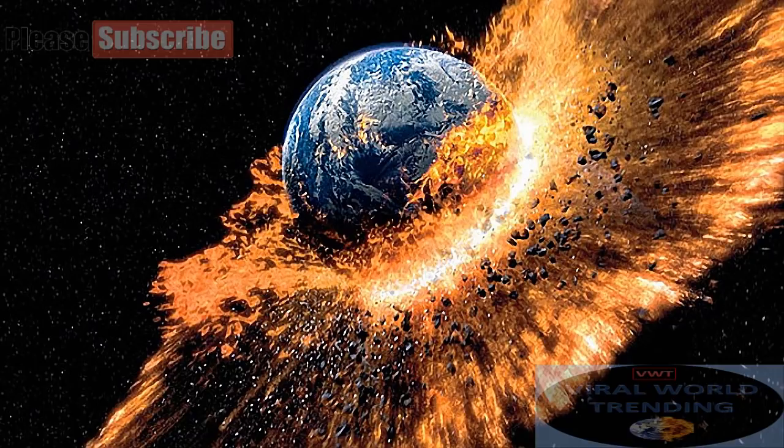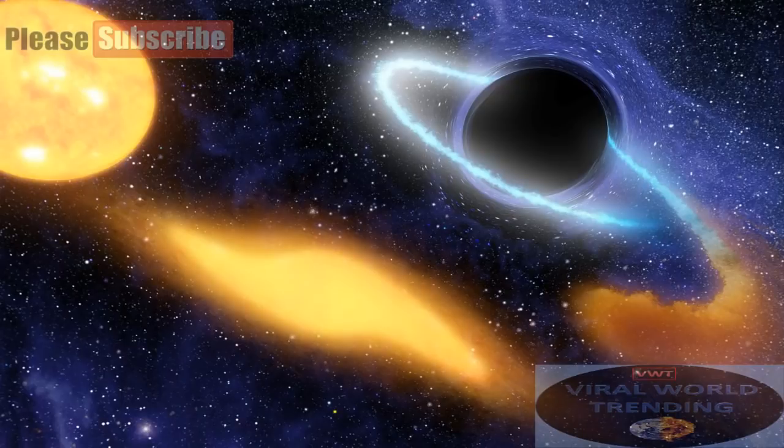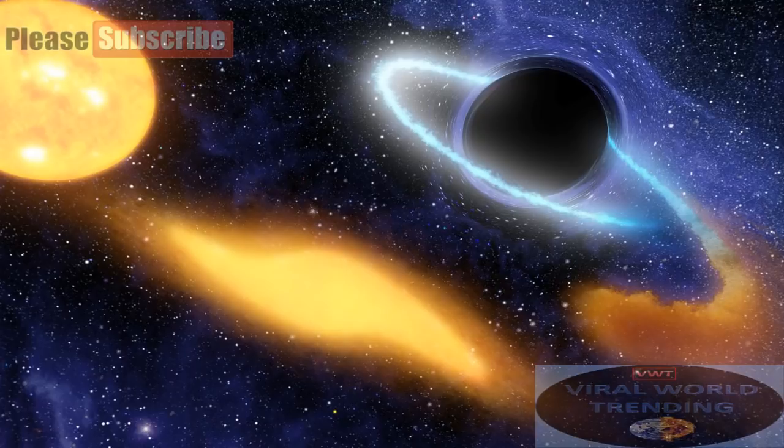Earth will not fall into a black hole because no black hole is close enough to the solar system for Earth to do that. Even if a black hole the same mass as the Sun were to take the place of the Sun, Earth still would not fall in. The black hole would have the same gravity as the Sun.